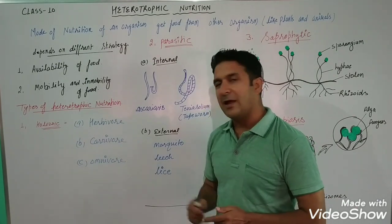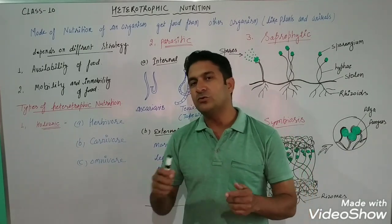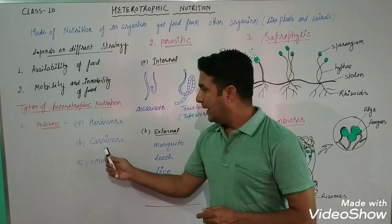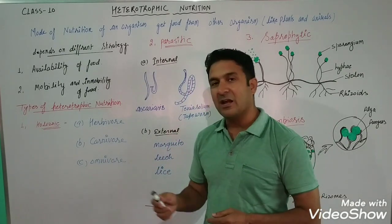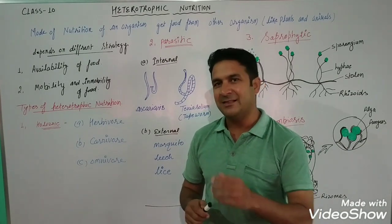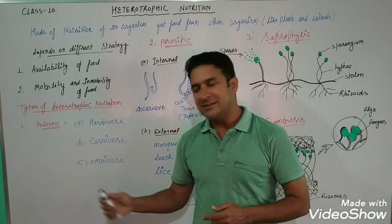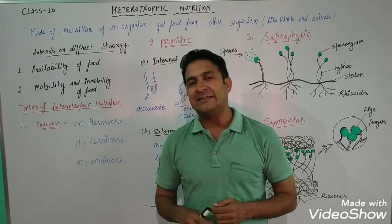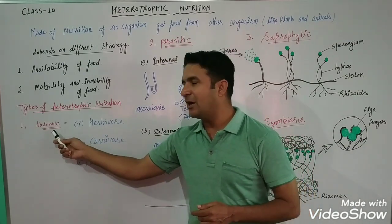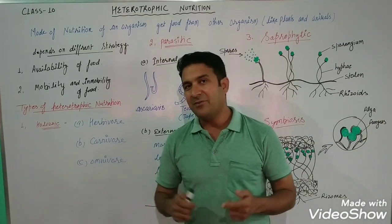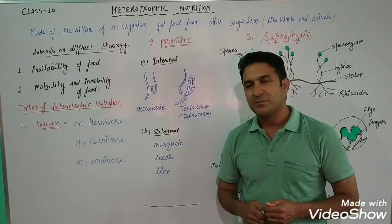In holozoic mode of nutrition, herbivore animals, carnivores, and omnivores are all included. Herbivores are those that eat plants or grass. Carnivores are those that eat the flesh or body of prey — they kill the prey first and then take food from their bodies. Omnivores are those that can eat both plants and animals. All three types come under holozoic mode of nutrition.